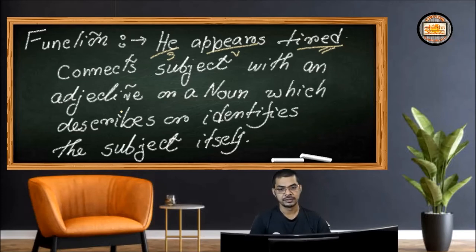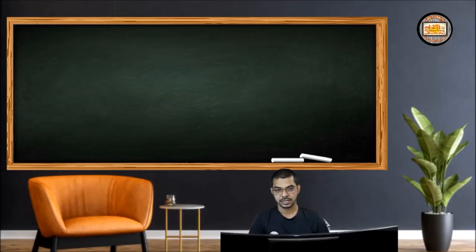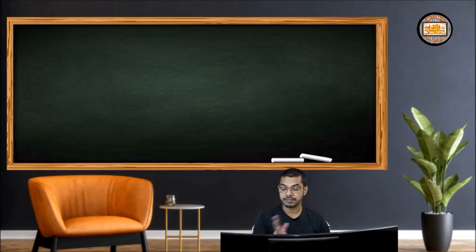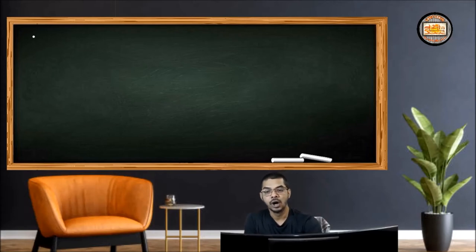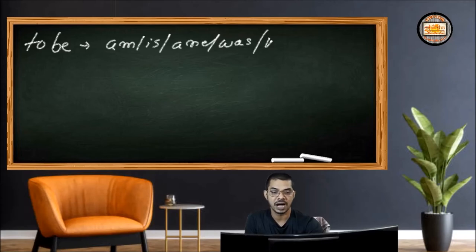Those are the ideas behind linking verbs. Now, why are linking verbs so essential to learn? Before we discuss that, let us find out what some basic linking verbs are. All the 'to be' verbs are used as linking verbs — that means 'am,' 'is,' 'are,' 'was,' 'were' — all these verbs are used as linking verbs.